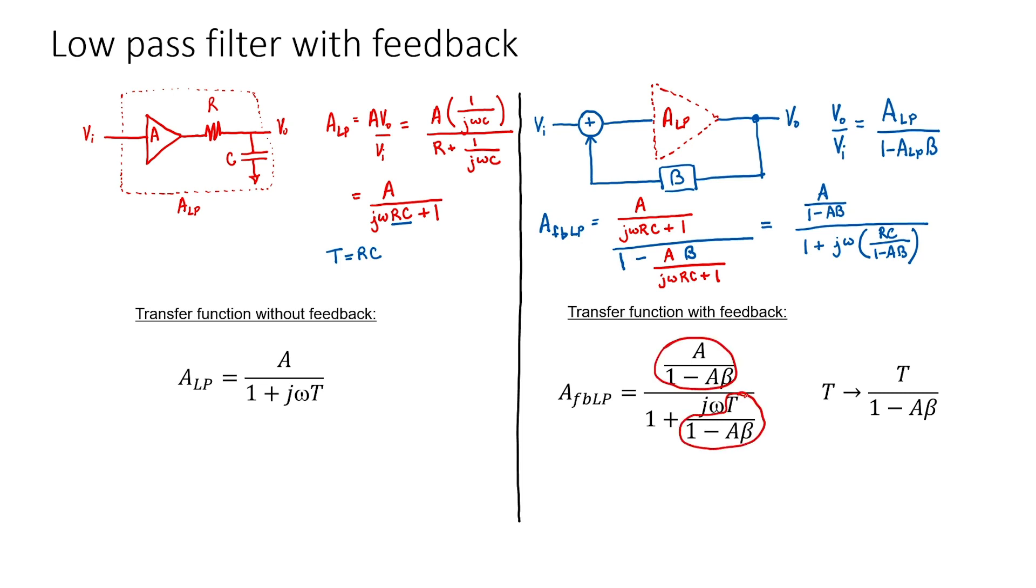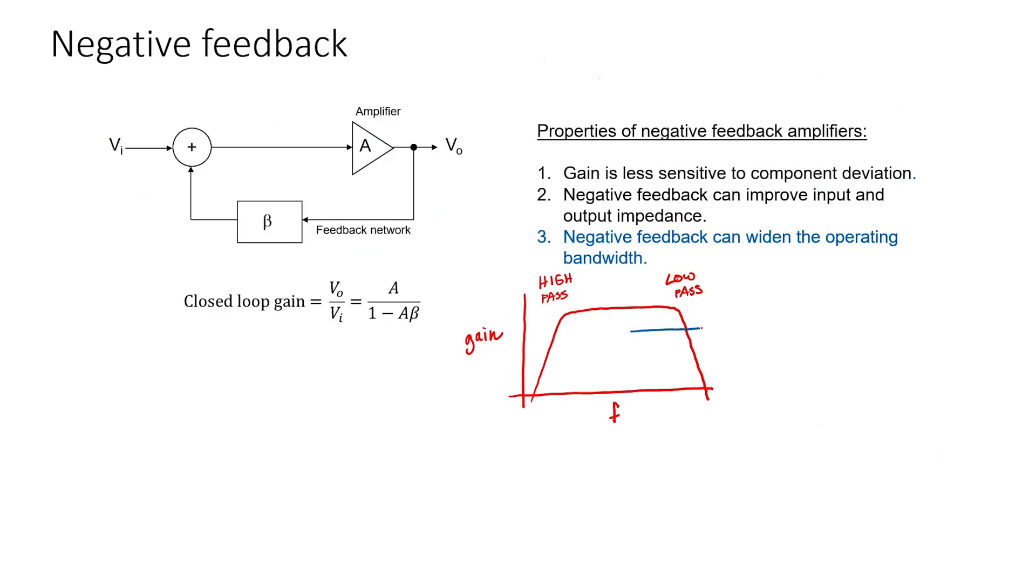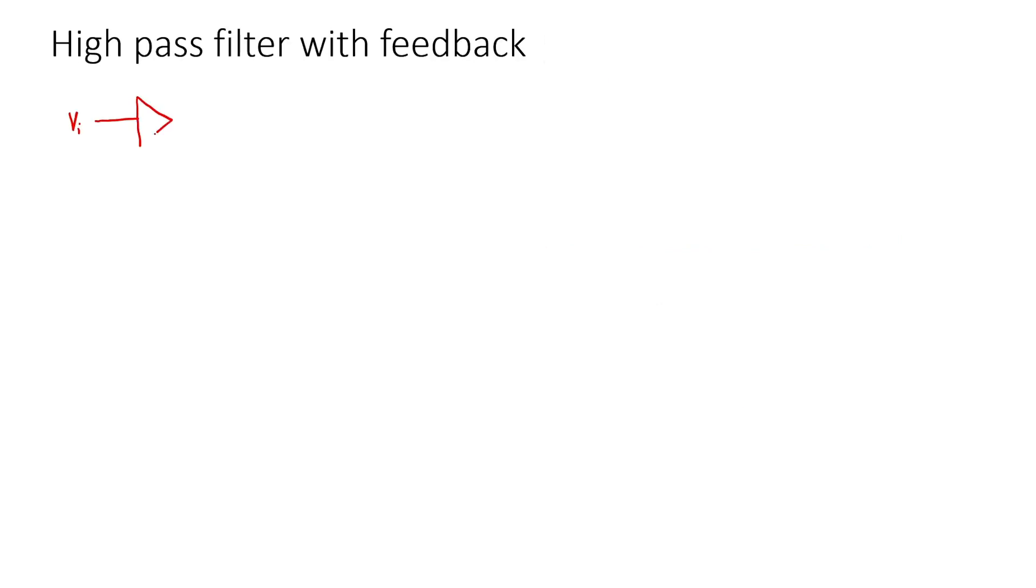if I compare the transfer function on the left with the transfer function on the right, I can see that the period has changed. Because the period is reduced, the frequency is increased. Negative feedback has changed the position of the pole in this filter. We've sacrificed gain in order to improve the operating bandwidth. Let's take a look at the high-pass side.